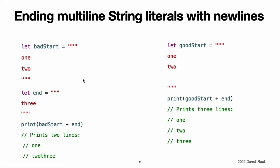In the code, concatenating badStart with end produces a two-line string, which is not the desired result. Because the last line of badStart does not end with a line break, that line gets combined with the first line of end. In contrast, both lines of goodStart end with a line break, so when it's combined with end, the result has three lines, as expected.